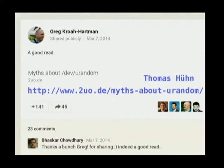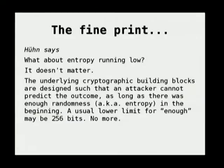There was an interesting post by Greg KH earlier this year, pointing to a blog post by Thomas Hune about myths about dev/urandom. This is important because if Greg KH says something, people pay attention. In this blog post, Hune talks about people rallying against dev/urandom, which is the pseudo-random number generator in the kernel. It's often used because it does not block. It's seeded from dev/random but provides a sequence of pseudorandom numbers. There was debate about the differences between dev/random, which blocks until the kernel determines there's enough entropy, versus dev/urandom.